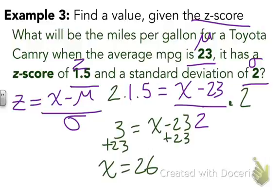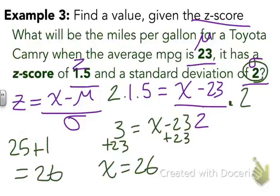In other words, if we know a car specifically has a z-score of 1.5, what that's telling us is that it's 1.5 standard deviations above the mean. Well, if it has a standard deviation of 2, one standard deviation above 23 would be 25, and half of a standard deviation would be 1. So then another half above is 26. That's just how we can work backwards given a z-score to find the original value.